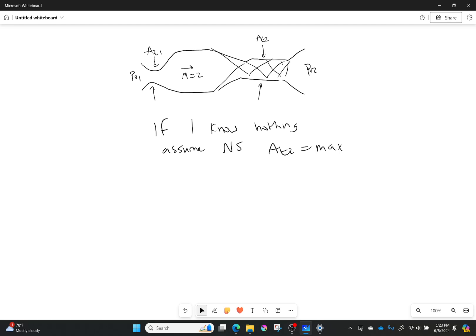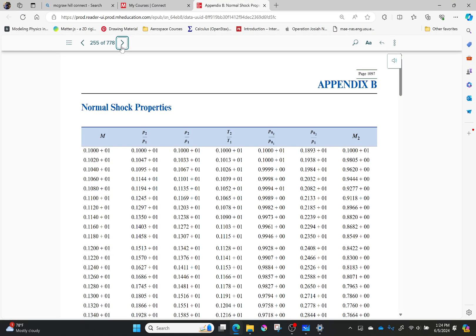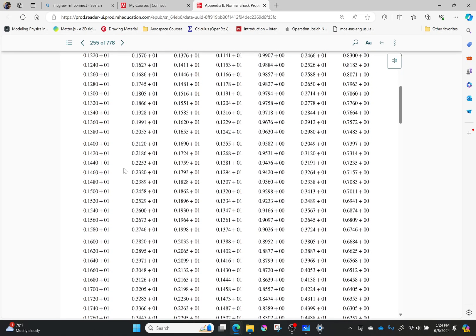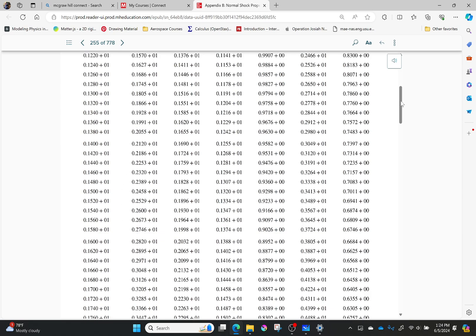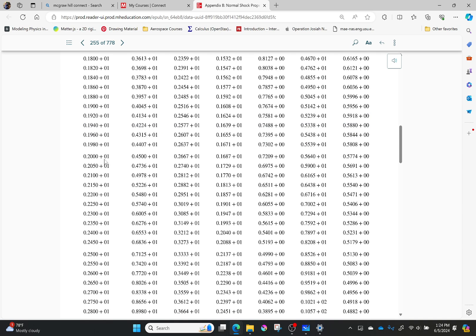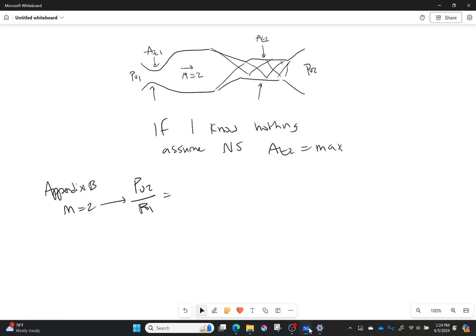So if I'm going to do that, then I need to get P02 over P01 for a normal shock. So I'm going to go to Appendix B. And for a Mach number that equals two, let's find P02 over P01 and figure out what it equals. Here we are in our normal shock tables. Let's go down to Mach number of two. So I need my pressure ratio, which would be 0.7209 right there for a Mach number of two.